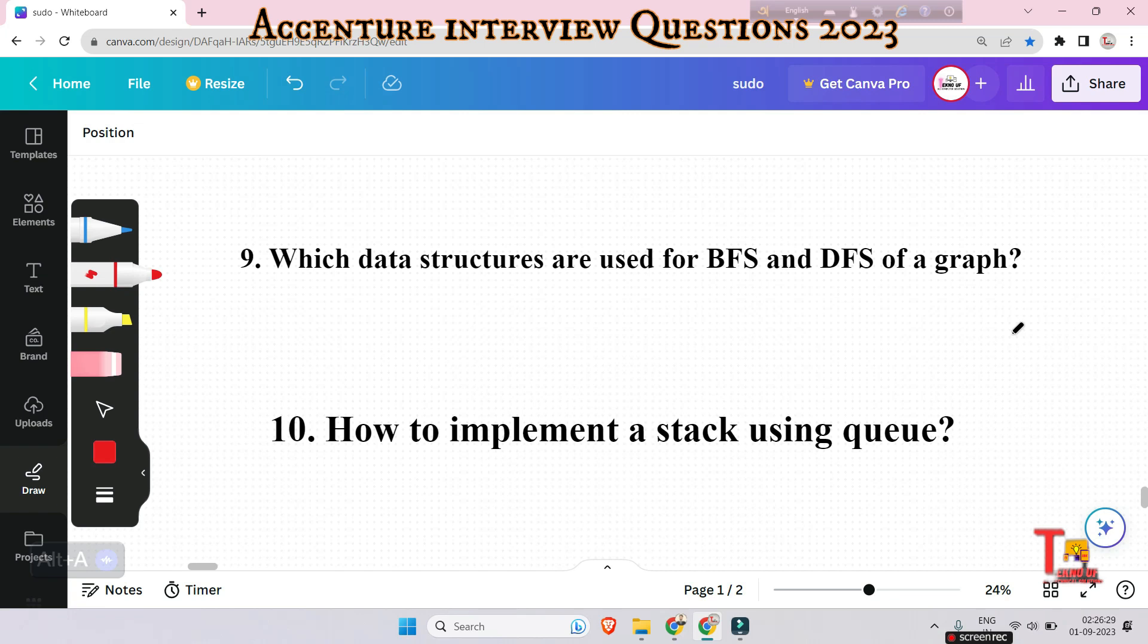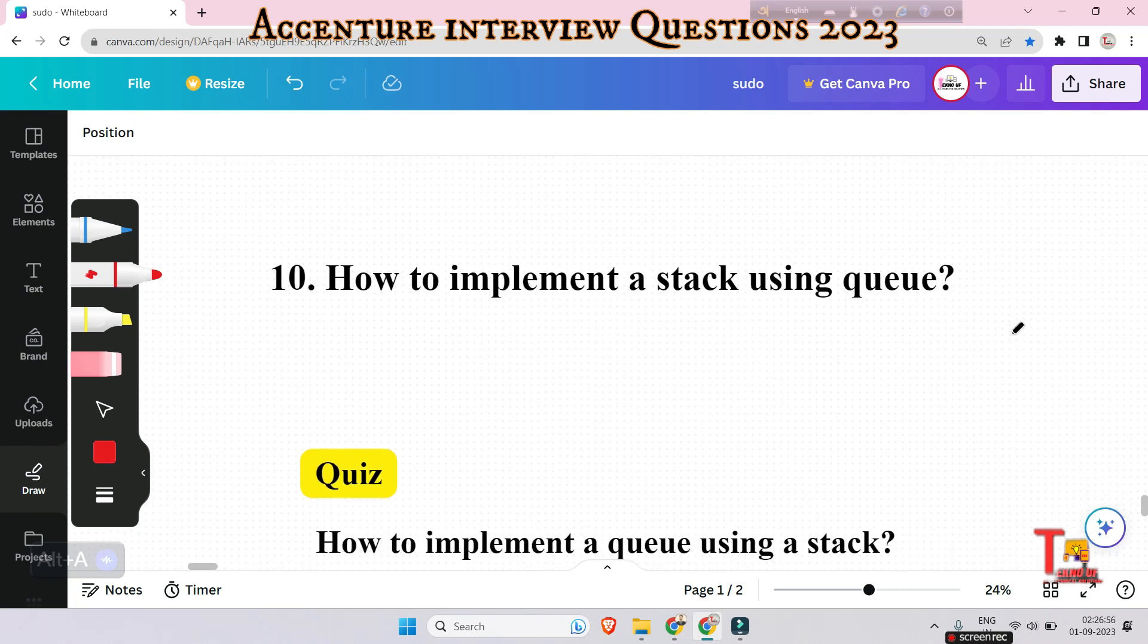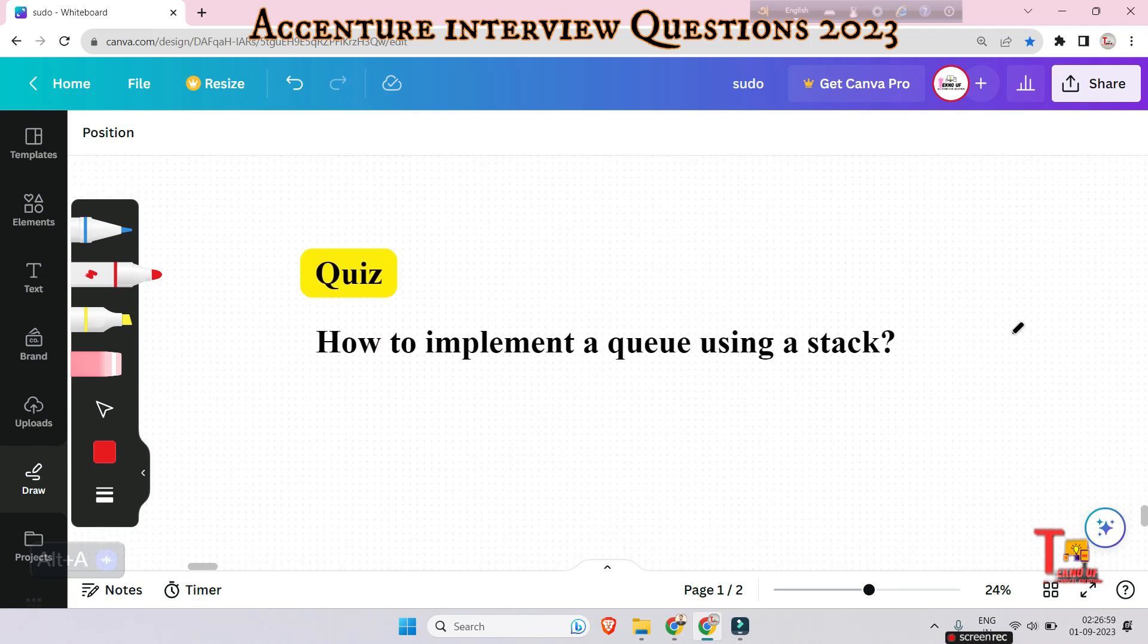How to implement a stack using queue? Stack can be implemented using two queues. Method one: by making push operations costly. Method two: by making pop operation costly. Next question: how to implement a queue using a stack? This is a quiz question for you. Please give me the answer in the comment box.